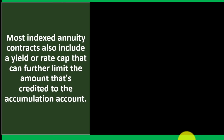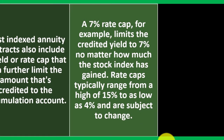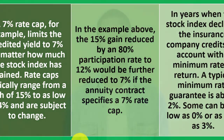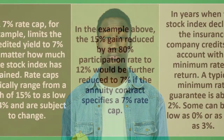Yield and rate caps: most indexed annuity contracts also include a yield or rate cap that can further limit the amount credited to the accumulation account. A 7 percent rate cap, for example, limits the credited yield to 7 percent no matter how much the stock index has gained. Rate caps typically range from a high of 15 percent to as low as 4 percent and are subject to change. In the earlier example, the 15 percent gain reduced by an 80 percent participation rate to 12 percent would be further reduced to 7 percent if the annuity contract specifies a 7 percent rate cap.